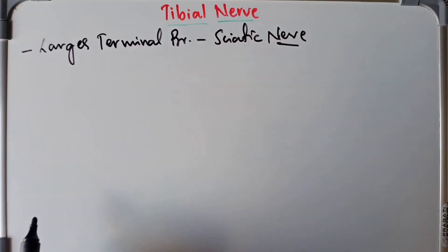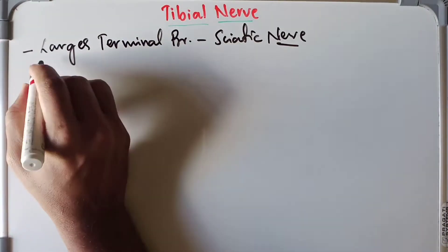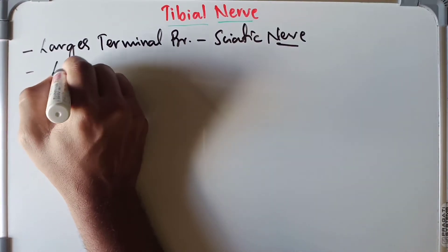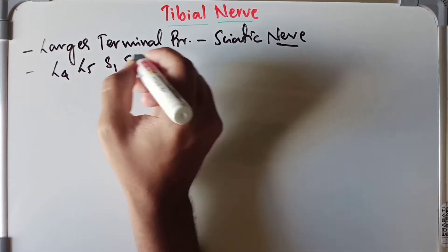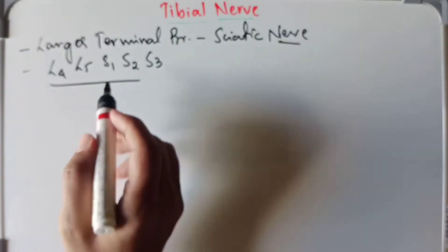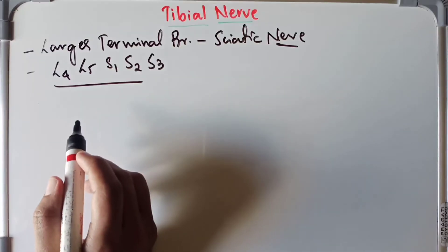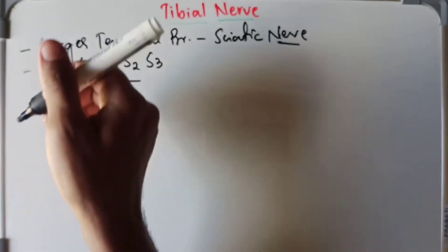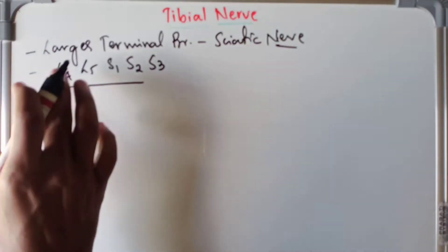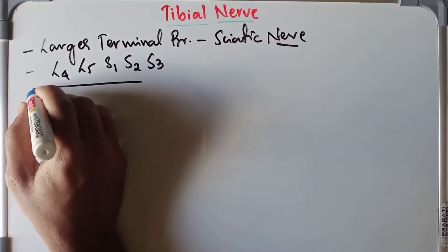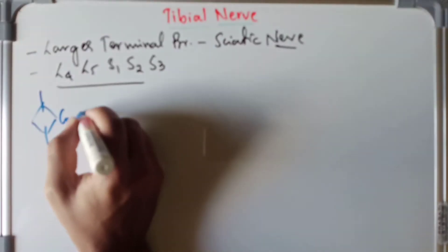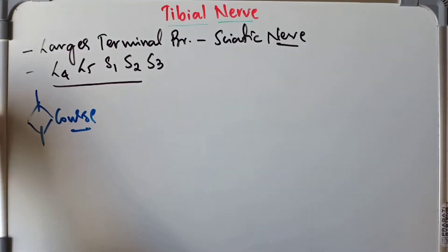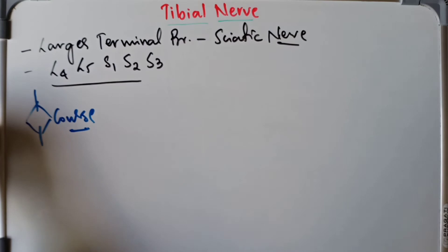The tibial nerve is the larger terminal branch of the sciatic nerve. It has the root value of L4, L5, S1, S2, and S3. When it comes to its course, it extends vertically downward from the superior angle of the popliteal fossa all the way to the inferior angle.